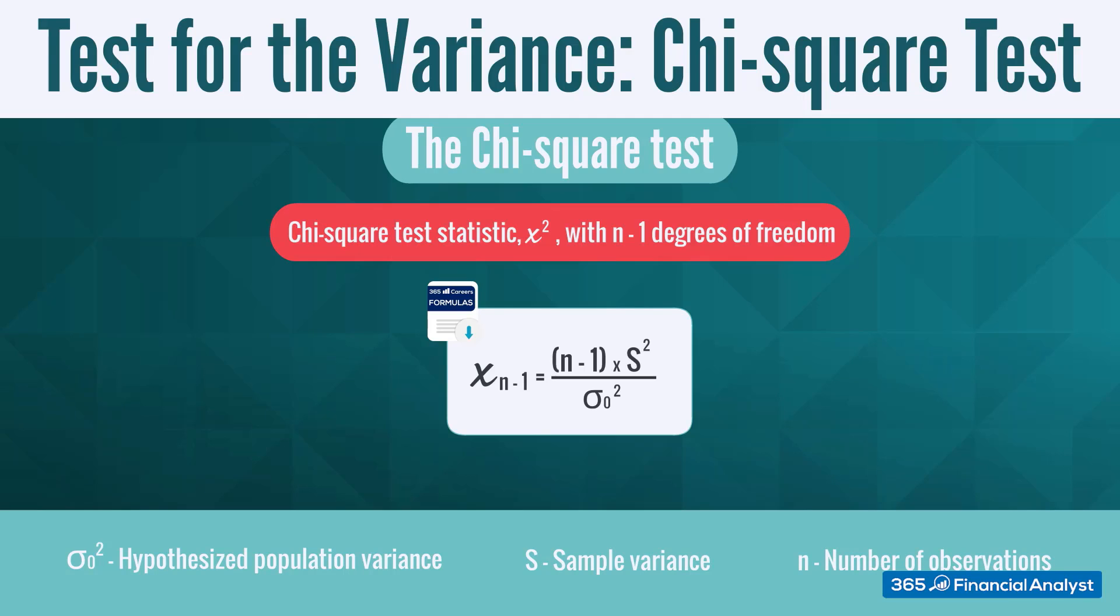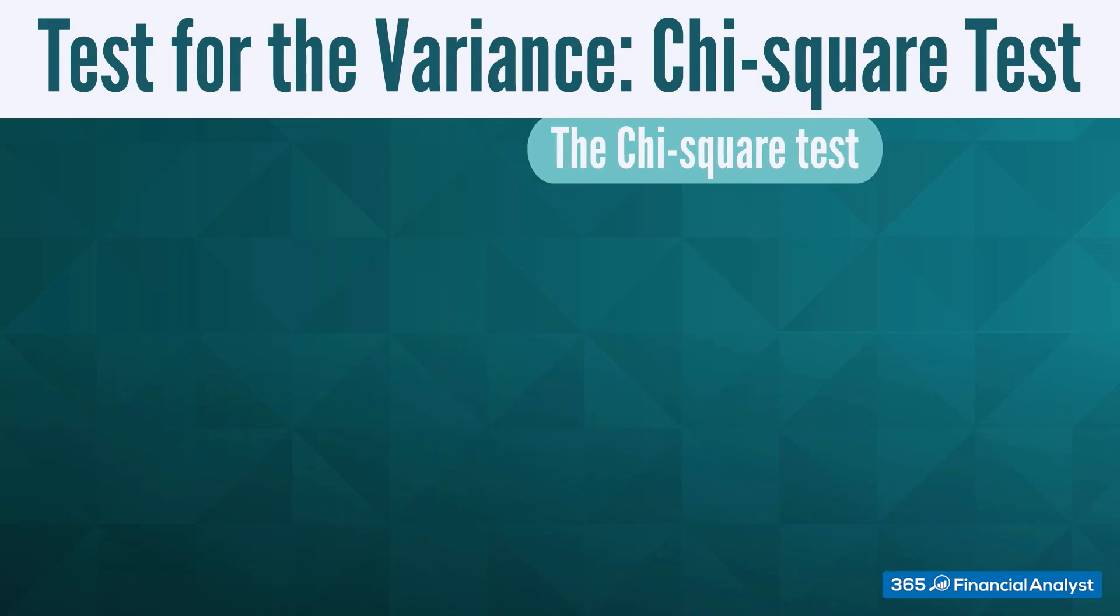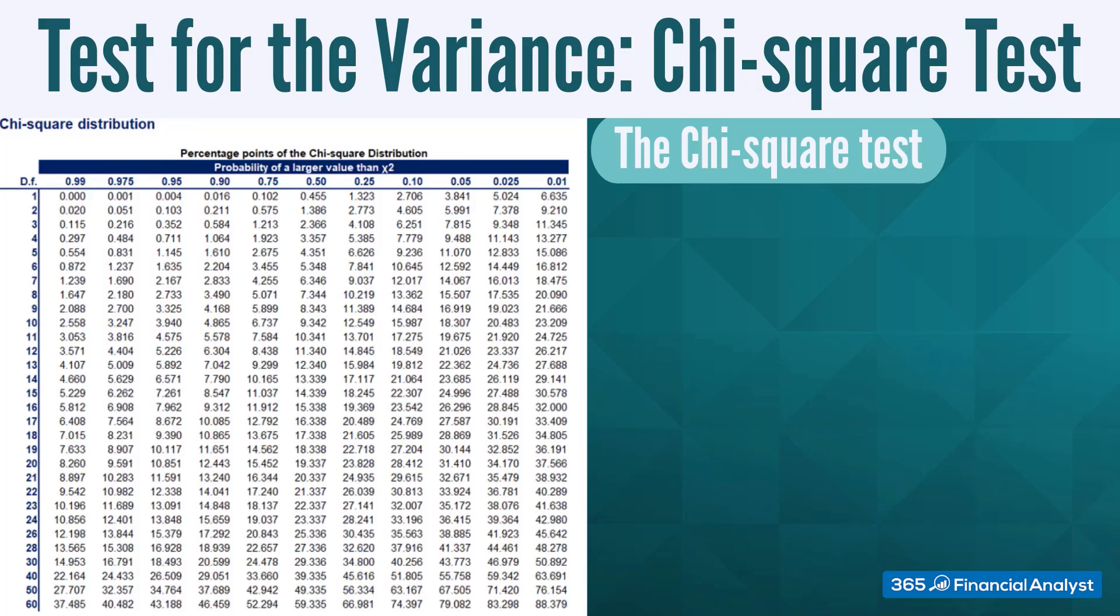The test is performed in the following way: we will calculate the chi-square statistic, and then compare it to a critical chi-square value for a significance level, taking into account the number of degrees of freedom. Analogically to the z and t tables we saw earlier, there is a chi-square percentage points distribution table, which can be found very easily on the internet. Let's see how to implement the formula in practice.